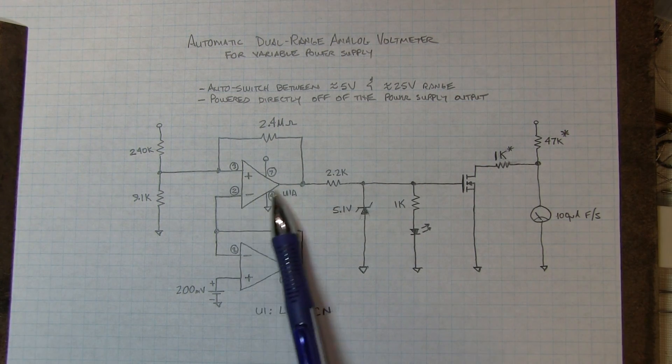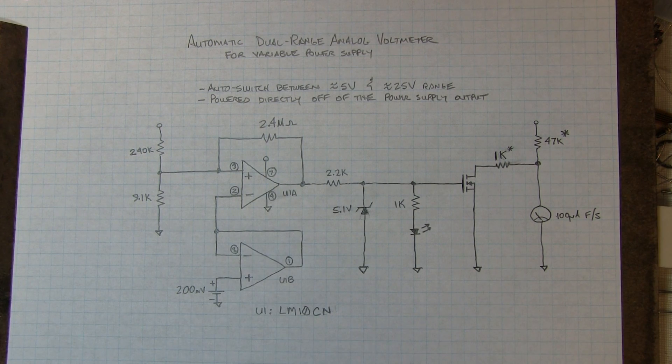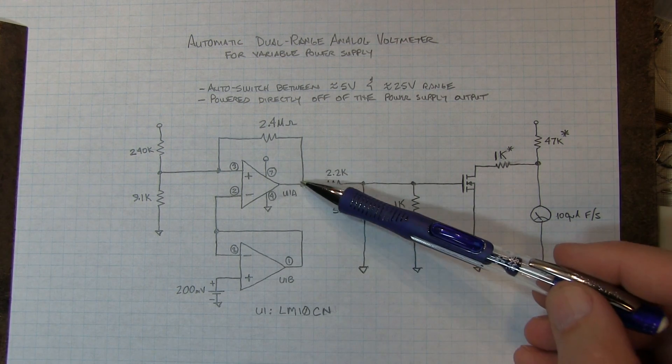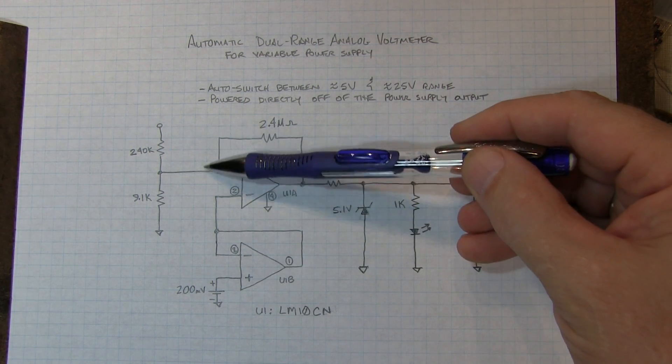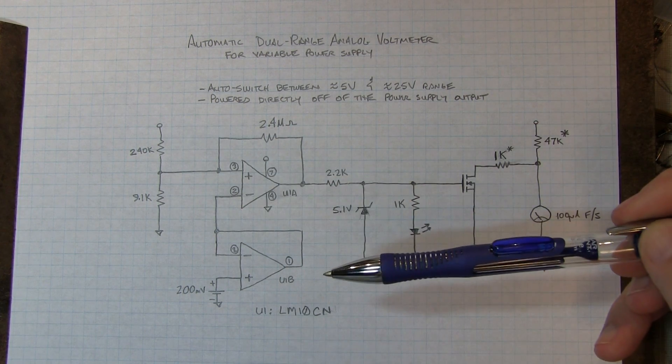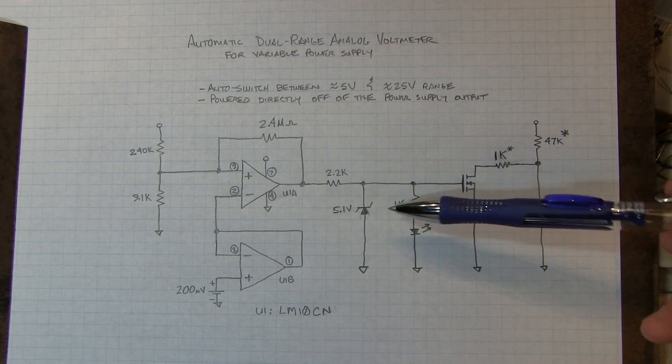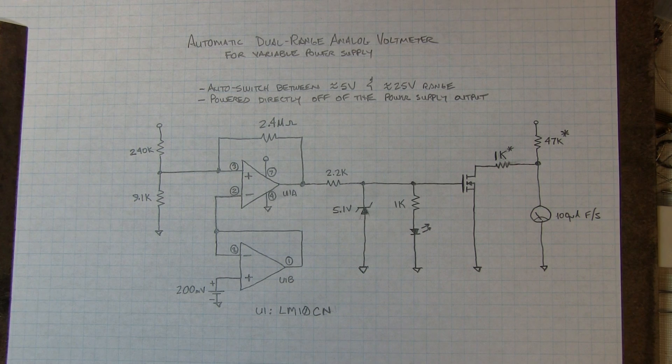So 5.5 volts and above, we're going to be above that reference. And below about 5 volts will be below that reference. We're using the op amp inside the LM10 really just as a comparator, to detect when we're above or below this threshold to basically turn the switching part of the circuit on or off.